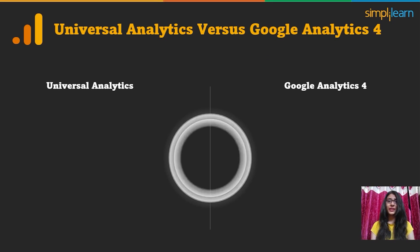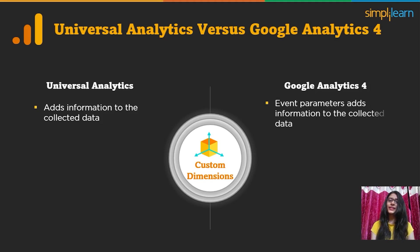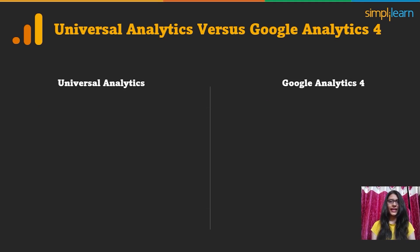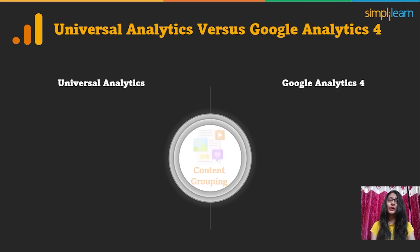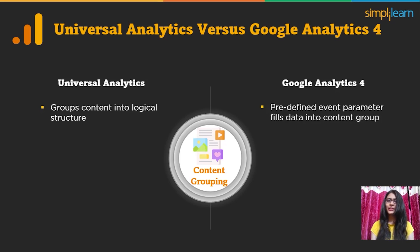Next, let's look at Custom Dimensions. In Universal Analytics, Custom Dimensions add information to the collected data, whereas in Google Analytics 4, information is added through event parameters. Moving ahead, the next metric is Content Grouping. In Universal Analytics, Content Grouping allows you to group content into a logical structure, after which you can view and compare metrics by group name. In Google Analytics 4, there is a predefined event parameter for content group, and this parameter fills the data into content group.